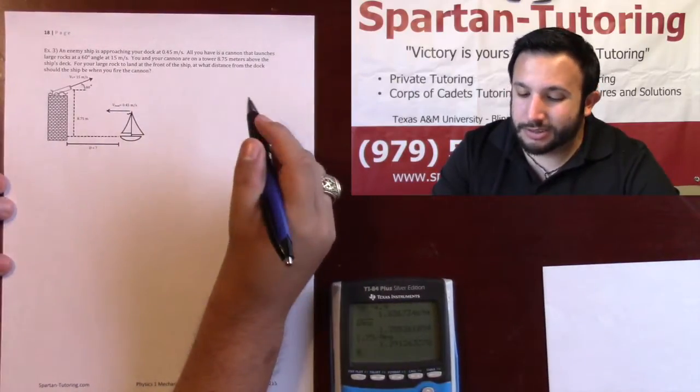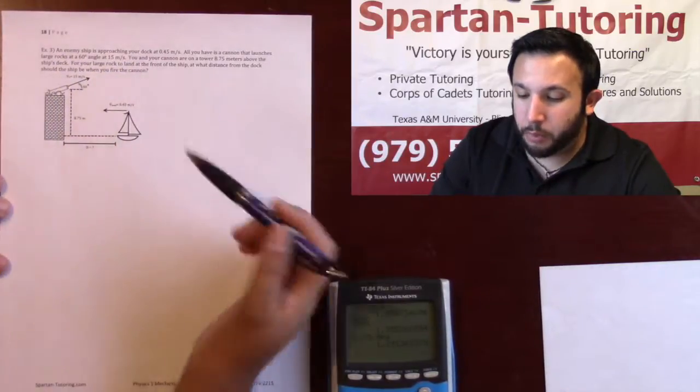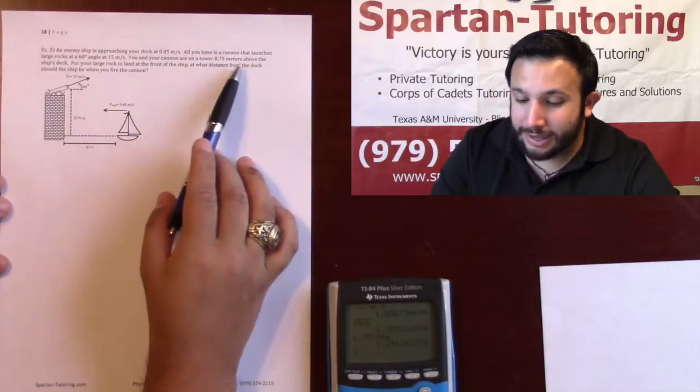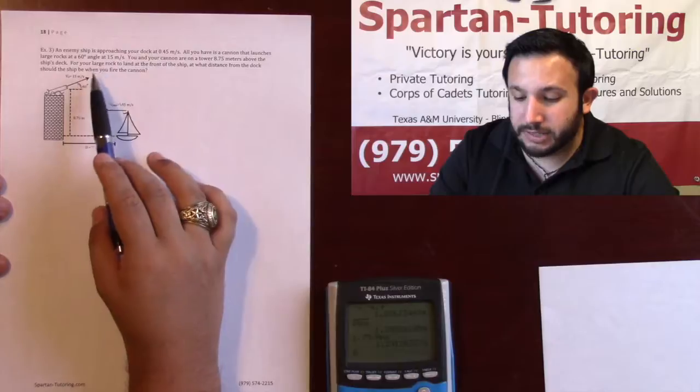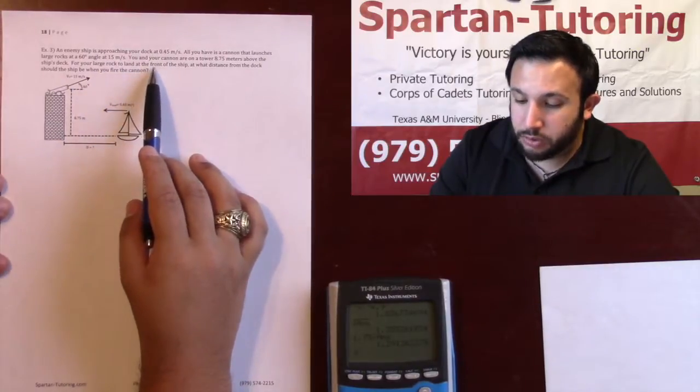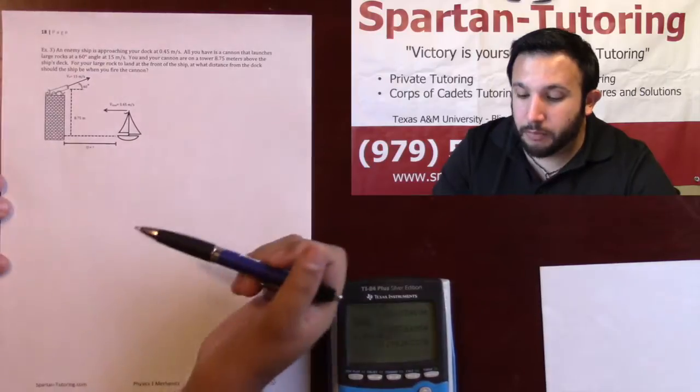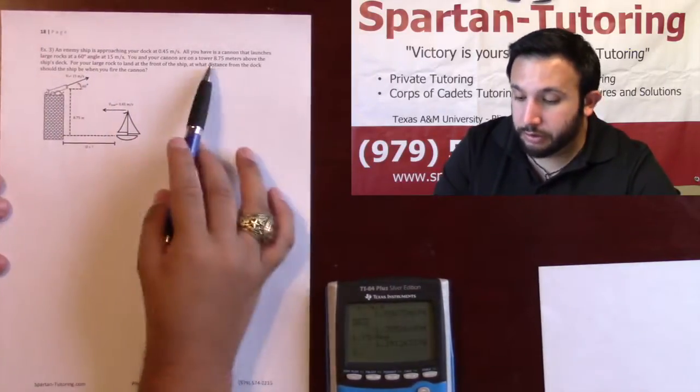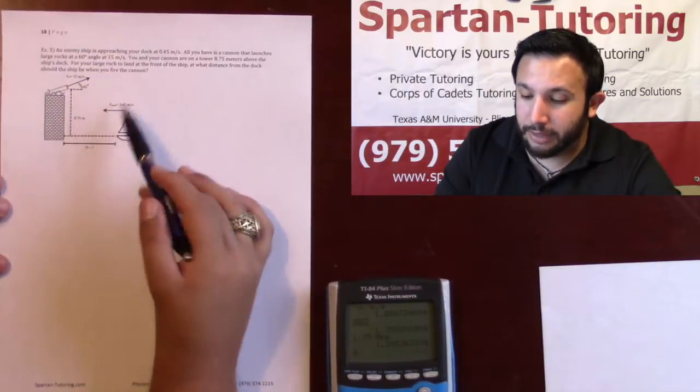Let's take a look at number three here. It says that an enemy ship is approaching your dock at 0.45 meters per second. All you have is a cannon that launches large rocks at a 60 degree angle at 15 meters per second. If you and your cannon are on a tower 8.75 meters above the ship's deck, for your large rocks to land at the front of the ship, at what distance from the dock should the ship be when you fire the cannon?